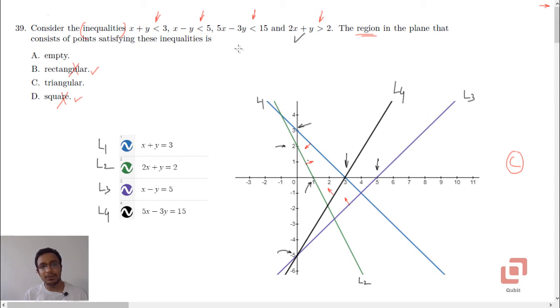So these 4 arrows indicate that the region in the plane that consists of points satisfying these inequalities is a triangular region. And which triangular region will it be? It will be this one. So it is not an empty set, definitely it is a triangular region.